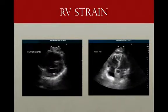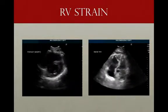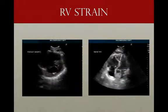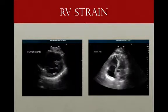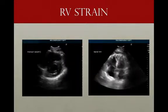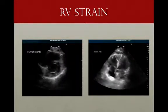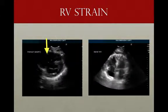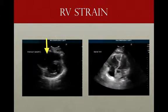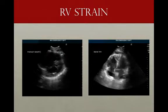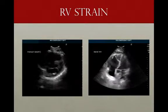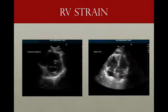Looking at the parasternal short axis, this is an example of a D sign. The right ventricle is so dilated and volume overloaded that it's causing pressure on the left ventricle, making it appear like a D. That's your D sign.